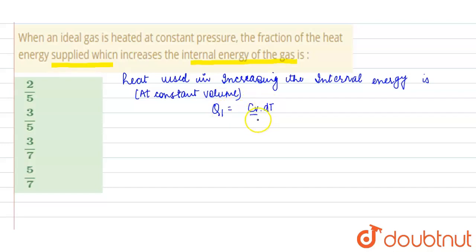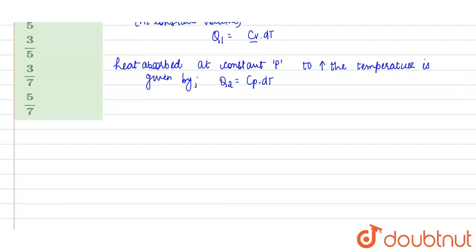Cv is the specific heat capacity at constant volume. Similarly, heat absorbed at constant pressure to increase the temperature is given by Q2 equals Cp dT. Cp is the specific heat capacity at constant pressure.